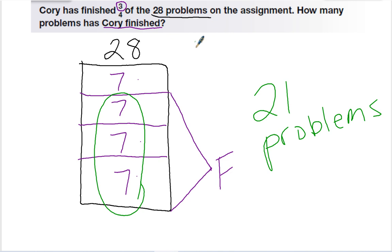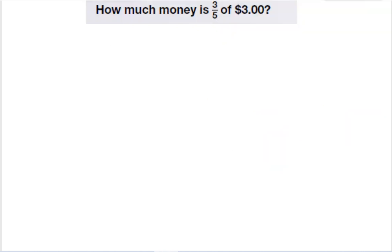You can also do seven times the three boxes to get twenty-one if you don't want to add. We can also do this with money.